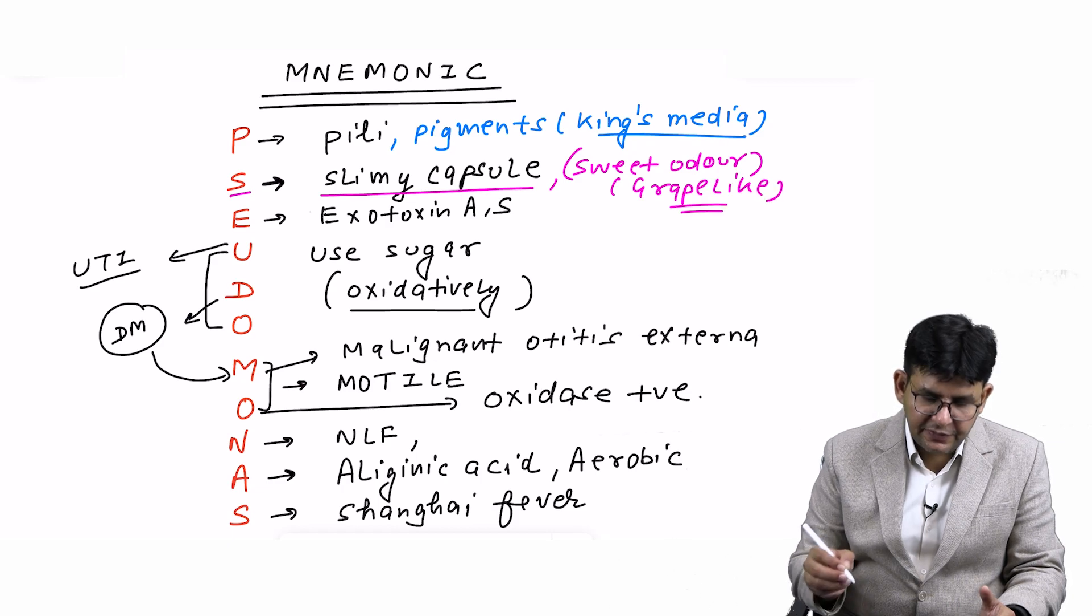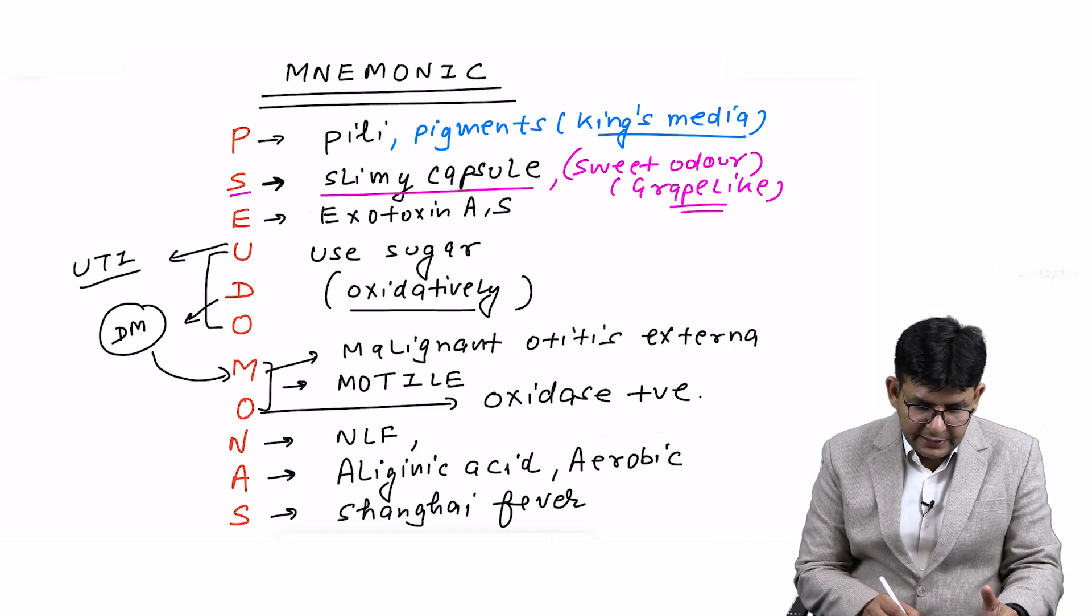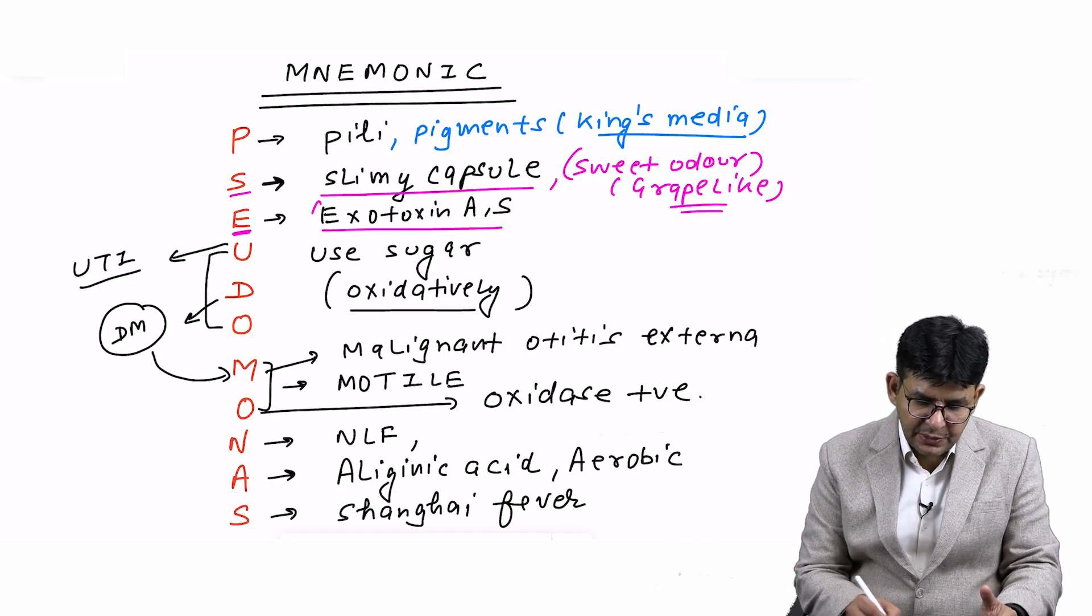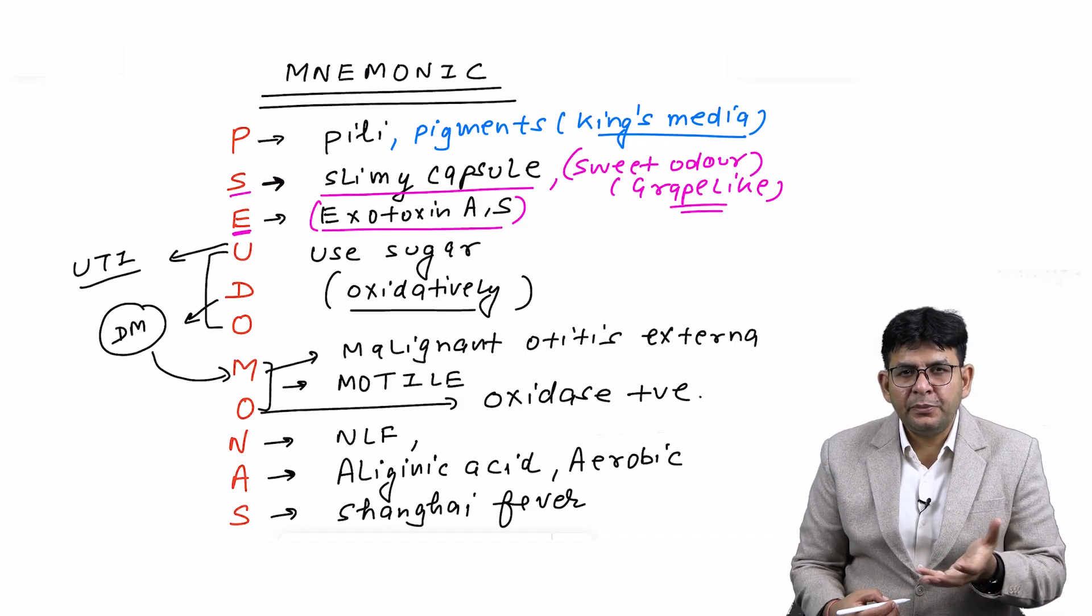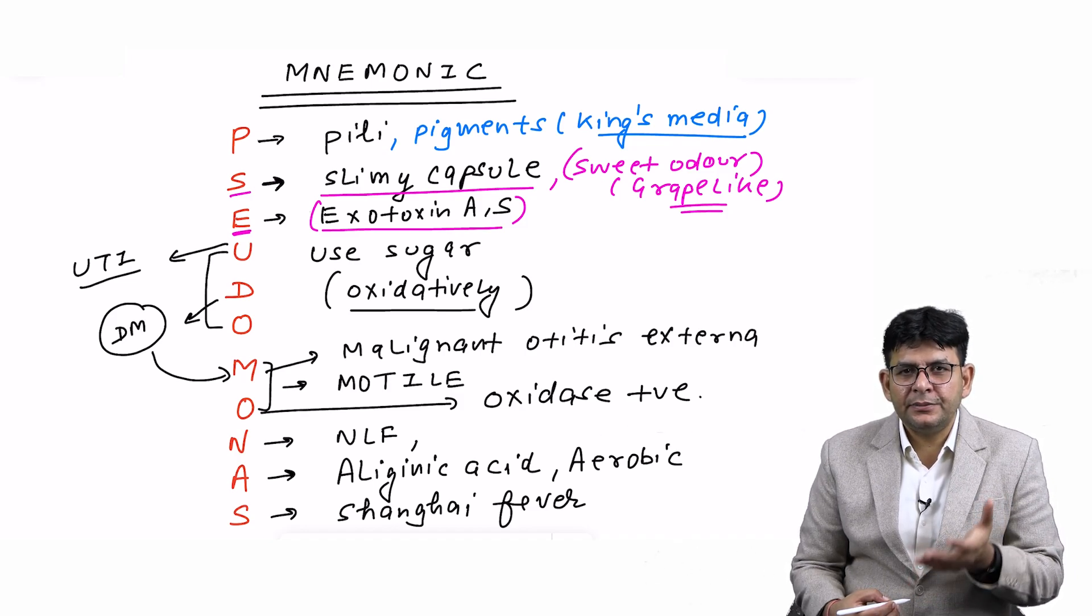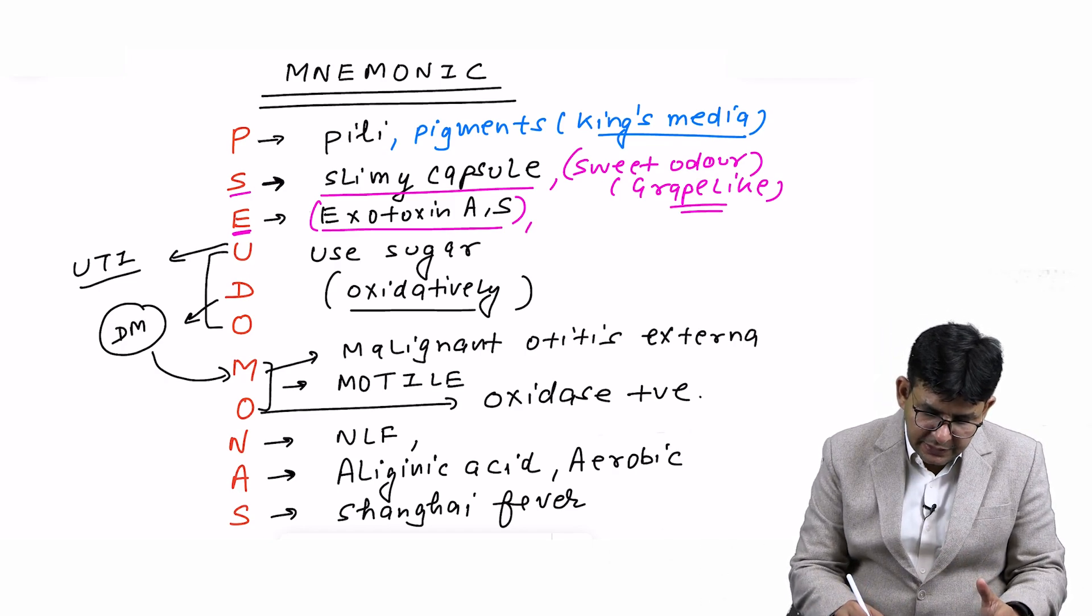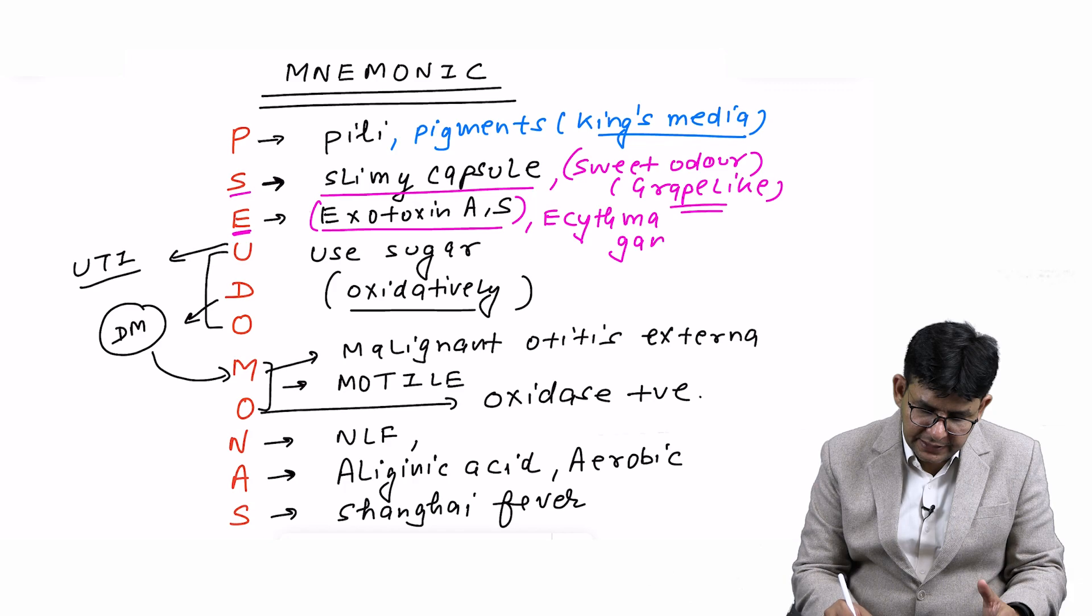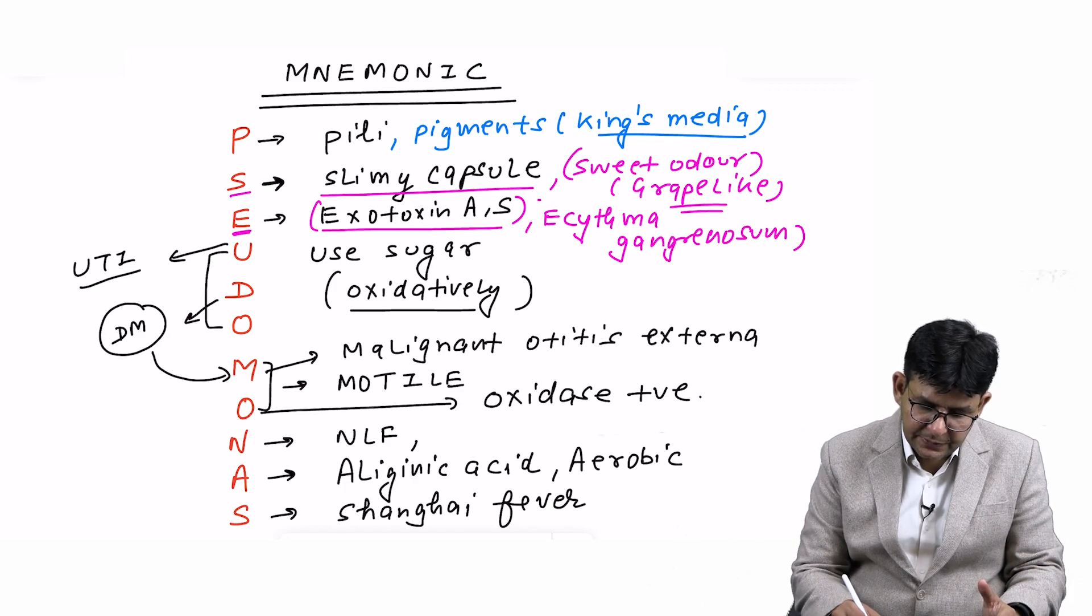E stands for Exotoxin A. It secretes this particular toxin, Exotoxin A, which inhibits protein synthesis by acting on the elongation factors. Along with that, you can remember from this a disease name: Ectyma gangrenosum.